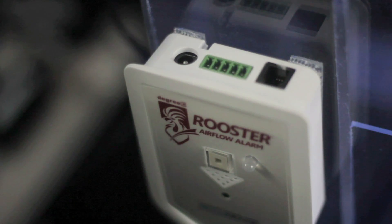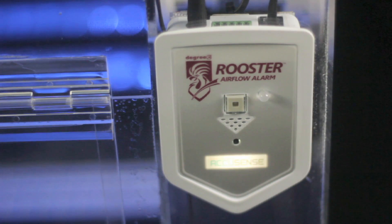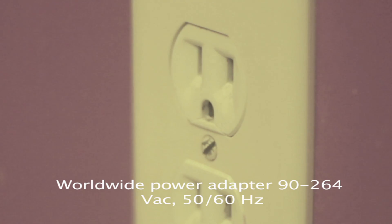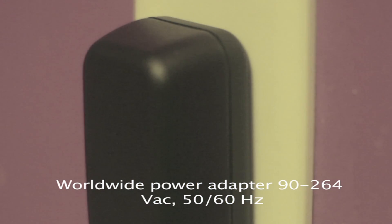The sensor probe is connected to the Rooster alarm monitor via an RJ11 port on top of the module. The Rooster module itself must be plugged into a 100 volt AC standard outlet using the supplied AC DC power adapter.